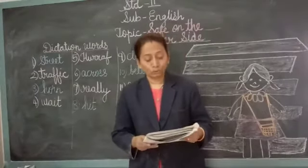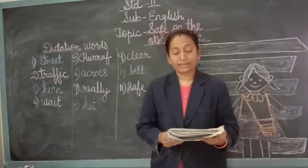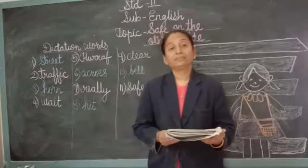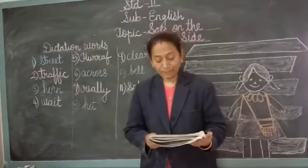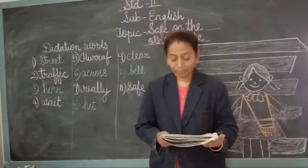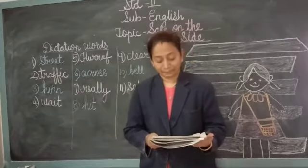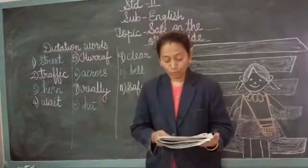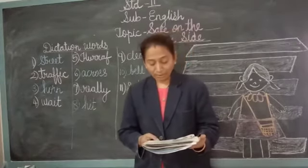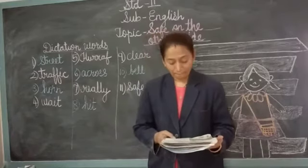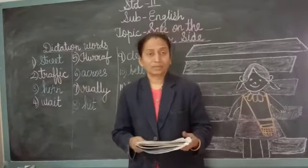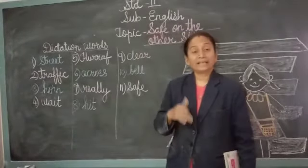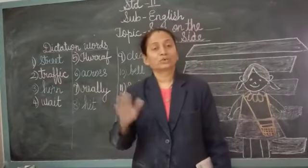I am reading this poem again for you. 'Up the street I look to see if any traffic is near me. Down the street I look as well and listen for a horn or bell. There is something coming, wait a bit. If I run out, I may hit. But now the road is clear, really clear. No car or motor bus is near. I will run across the road so wide. Hooray, I am safe on the other side.' This boy crossed the road safely and he is very happy.